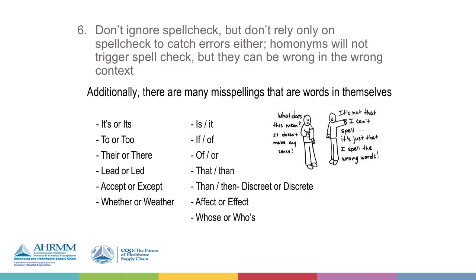Rule number six is looking at your spelling and being very careful about using spell check. Spell check is a great thing. I use it all the time. We won't let a deck go out unless people have used spell check, because you will pick things up. But spell check does not pick up everything. There are lots of times when you will put in a correctly spelled word, but that word just doesn't fit in the document you're writing.